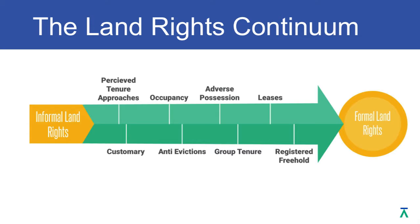There are different aspects along the way. We talk a lot about customary rights — maybe a community has rights to the area where they're living rather than an individual. Maybe they're unlikely to get evicted. Maybe they have a lease. Maybe it's registered. Maybe they're all the way to having that title. We're just trying to move along the arrow.